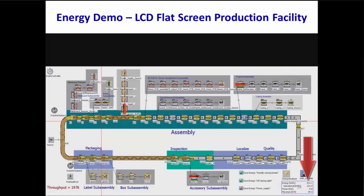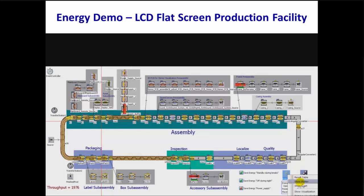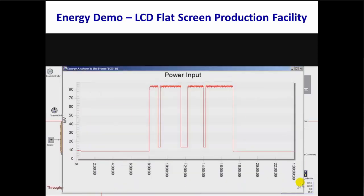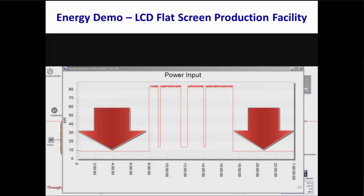After running our model for one day, the Energy Analyzer's display panel shows that we've decreased total power consumption from 1,820.9 kWh to 819.1 kWh, and once again we achieved these savings without any decrease in throughput. Let's take another look at the Energy Analyzer Show Plotter option. During off-shift or unplanned time, instead of consuming approximately 77 kW, our equipment is consuming just about 8 kW.